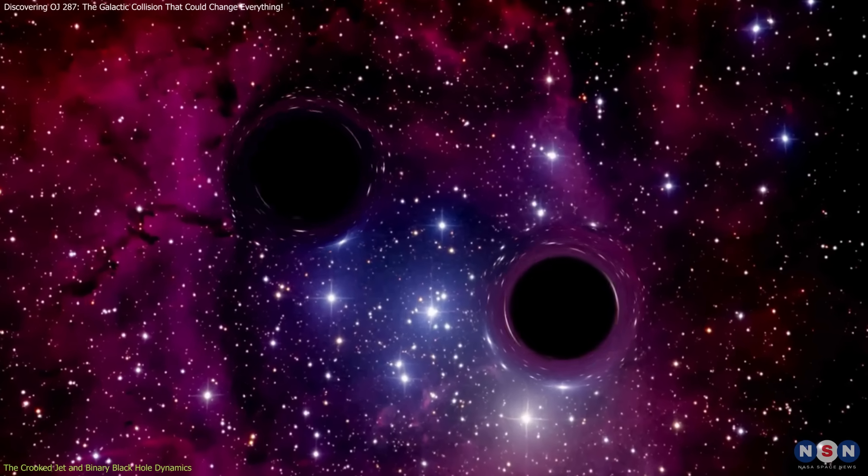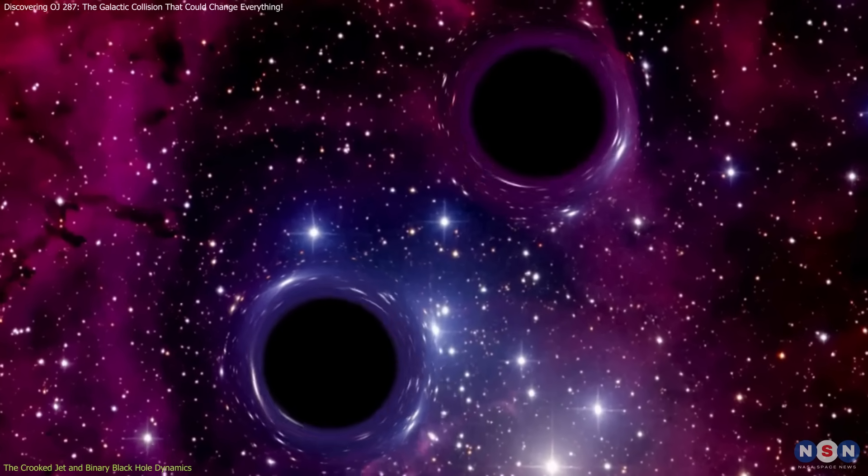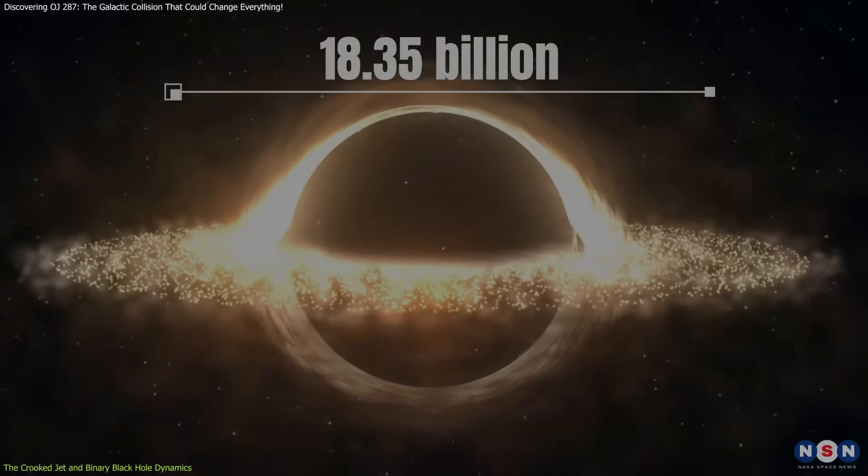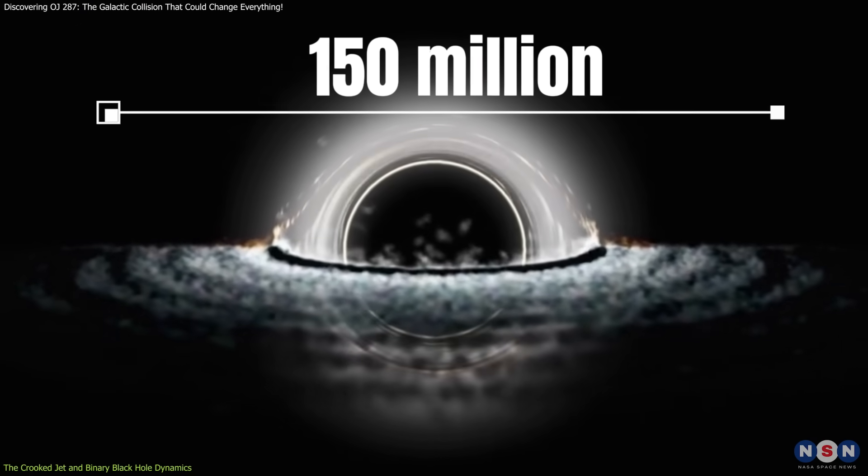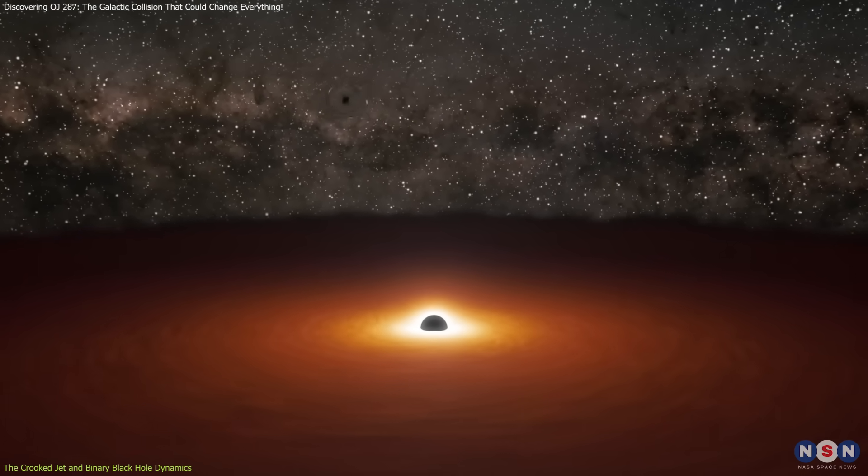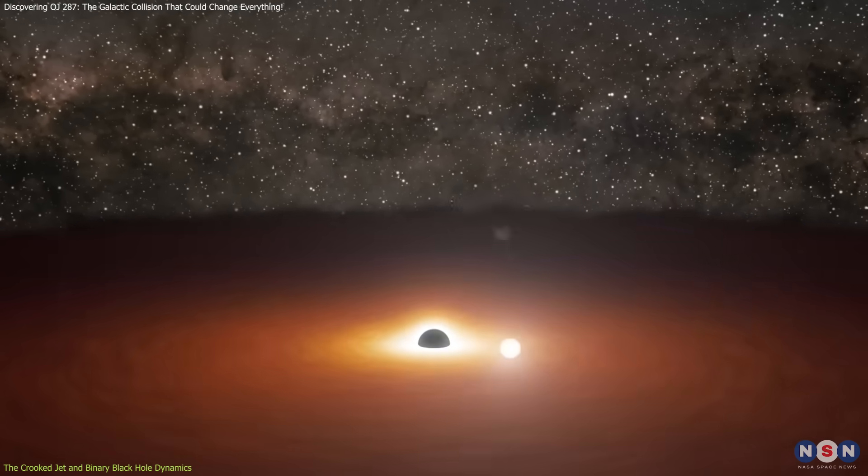This binary system is pivotal to understanding how these two supermassive black holes interact. The primary has a mass of 18.35 billion solar masses, while its companion is about 150 million solar masses. The two black holes are in an elliptical orbit, and every 12 years, the smaller passes through the accretion disk of the larger one.